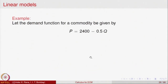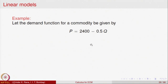Let us look at the price and demand function given by P = 2400 − 0.5Q. For this linear demand function, minus 0.5 is the slope.